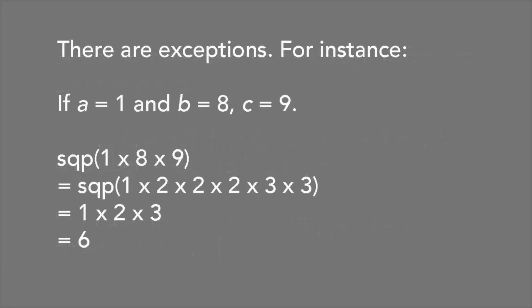Occasionally, however, this isn't true. For instance, if A equals 1 and B equals 8, then C equals 1 plus 8, or 9. And the square-free part of ABC is the square-free part of 1 times 8 times 9.